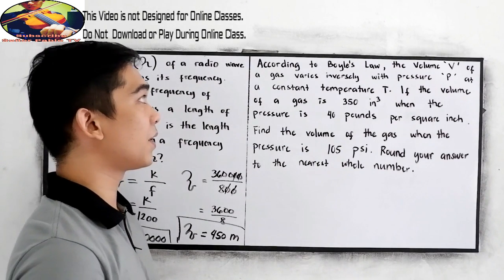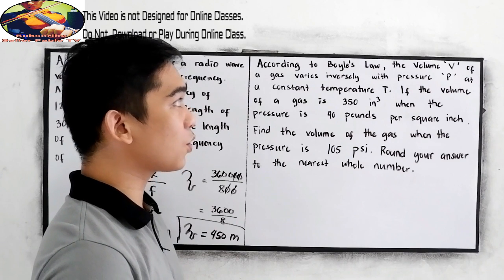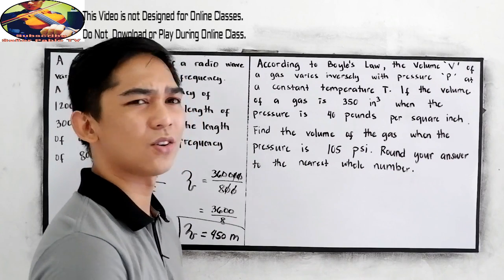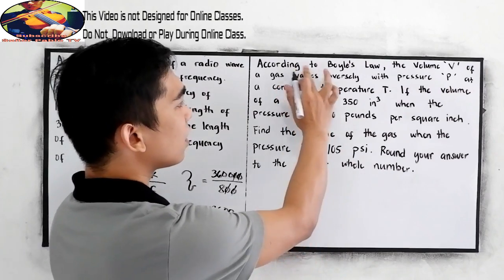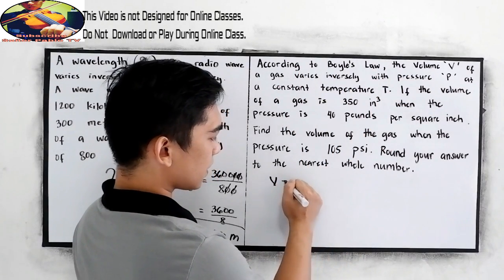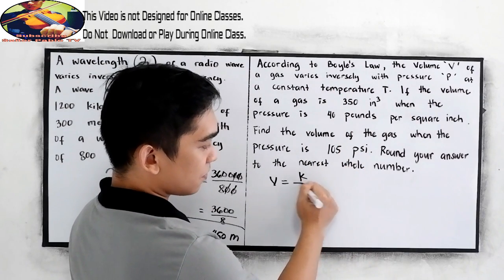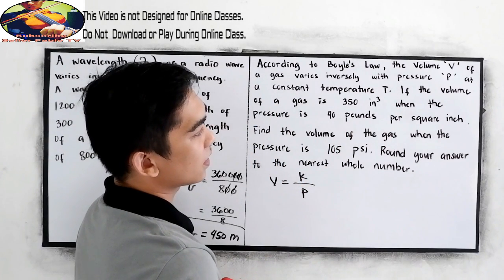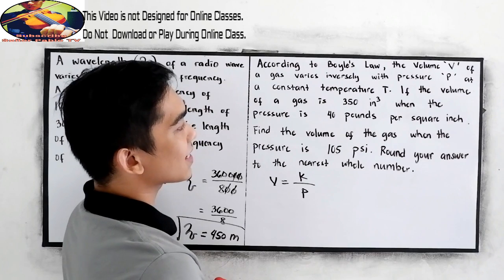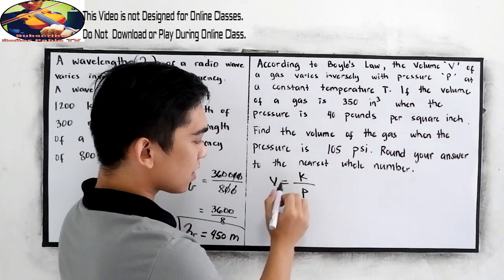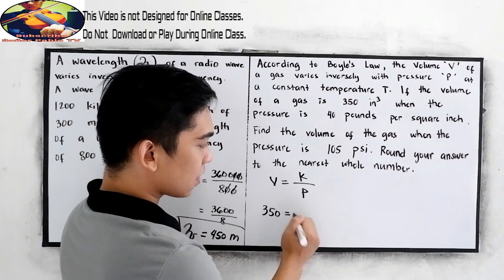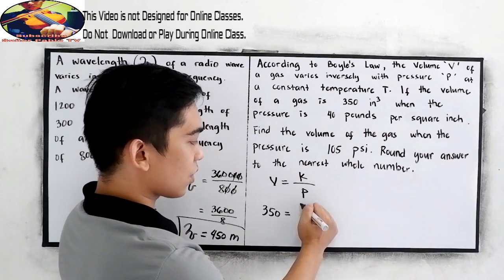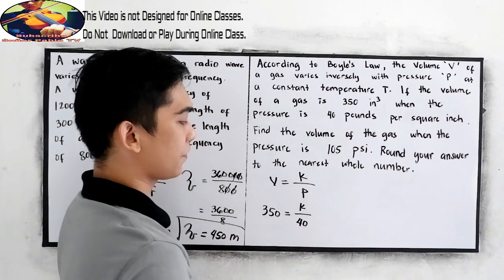Next, number 2 example. According to Boyle's law, the volume of a gas varies inversely with pressure P. Let us write our equation of variation. The volume V varies inversely as the pressure P at a constant temperature T. If the volume of a gas is 350 cubic inches when the pressure is 40 pounds per square inches, so V equals K over 40.